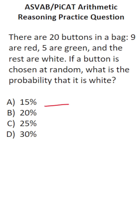So it's going to be the number of white buttons in the bag divided by the total number of buttons in the bag. There are 20 buttons in the bag in total. How many of them are white? We'll do 20 minus 9 red ones and 5 green ones, so that's going to be 20 minus 14. So we know there are 6 white buttons in the bag.